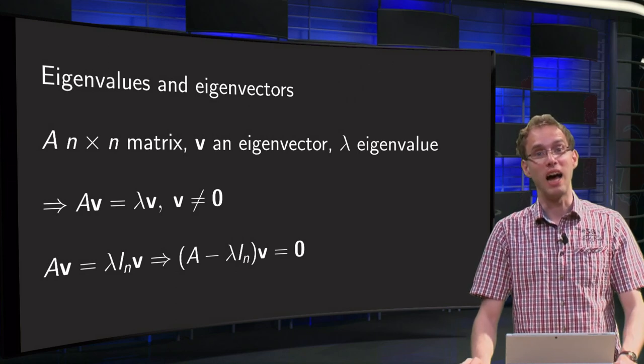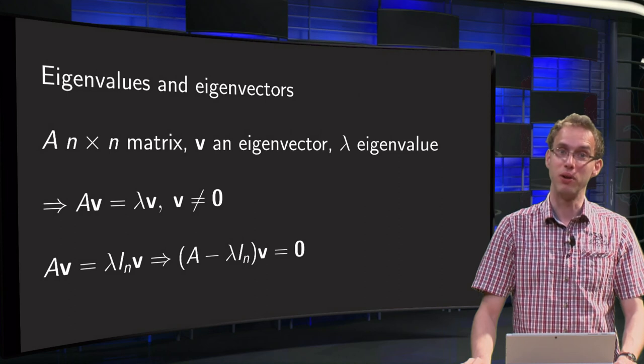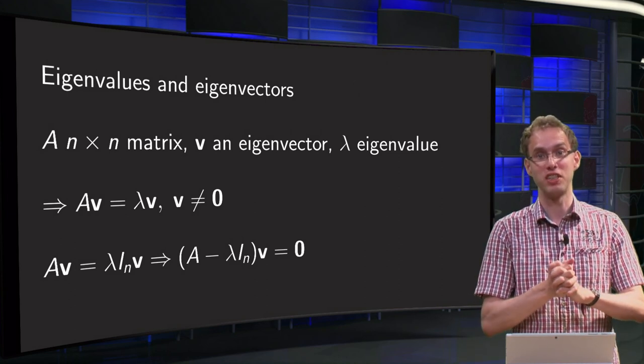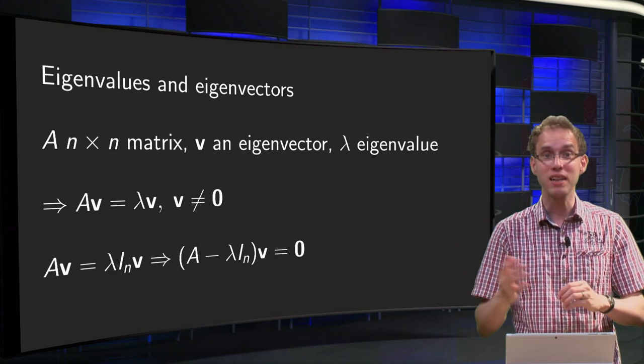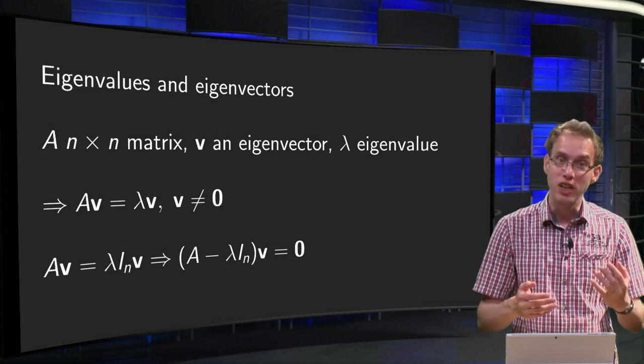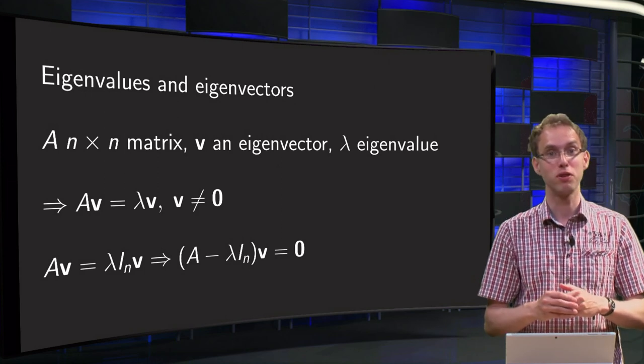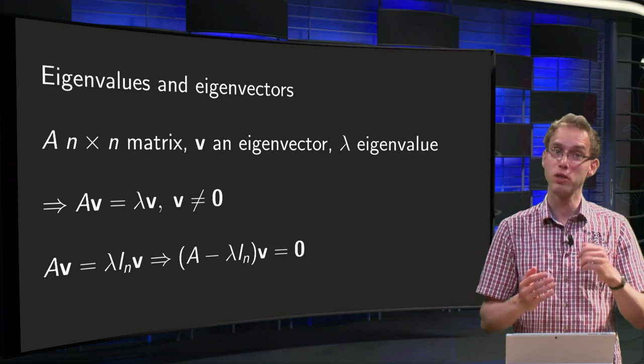We know how we can compute the eigenvectors of a matrix if we know the eigenvalues. But how can we compute the eigenvalues of a matrix A if we do not know the eigenvectors? You will learn the general procedure in this video and you will also see an explicit example of the computation of the eigenvalues of a 2 by 2 matrix.